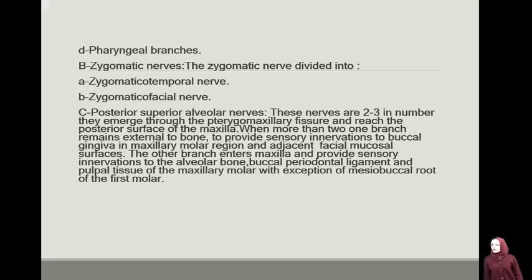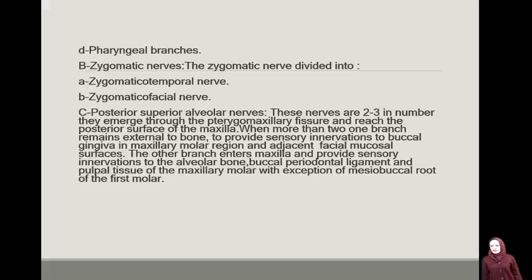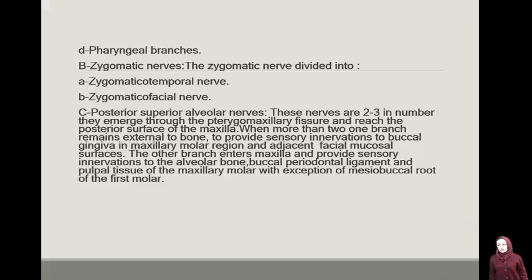These nerves are 2 to 3 in number. They emerge through the pterygomaxillary fissure and reach the posterior surface of the maxilla. When more than one branch remains superficial to the bone, they provide sensory innervation to the buccal gingiva in the maxillary molar region and adjacent facial mucosal surfaces. The other branch enters the maxilla and provides innervation to the alveolar bone, the buccal periodontal ligament, and the pulpal tissue of the maxillary molars, with the exception of the mesiobuccal root of the first molar.